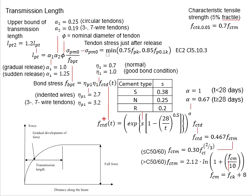f_ctd(t) stands for design concrete tensile strength at a particular instant. t represents the age of concrete in days when you determine its transmission length. This is obtained from this formula, governed by cement type. Depending on cement type, the s value varies.